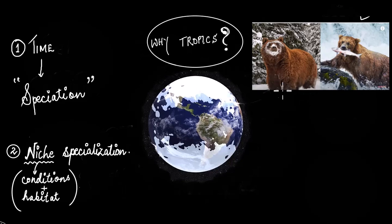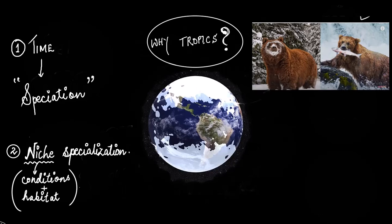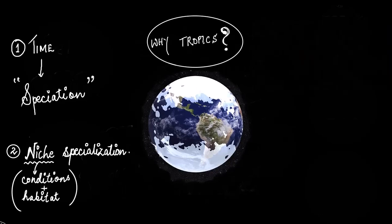So animals there have to be more adaptable, and therefore speciation is much slower. On the other hand, as we discussed earlier, due to constant conditions in the tropics, niche specialization is possible that finally leads to formation of new species. And that again explains why there is more biodiversity in the tropics.